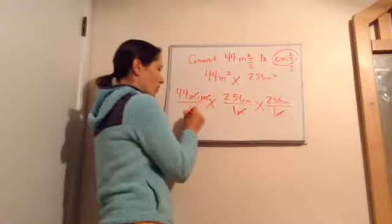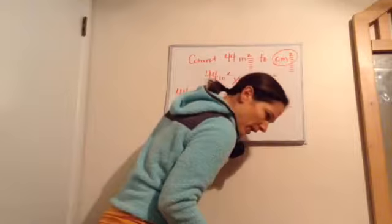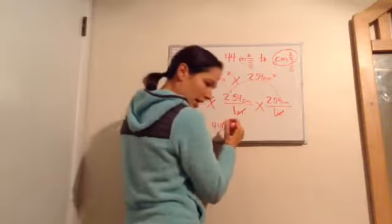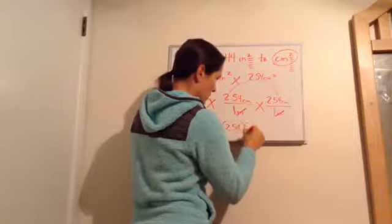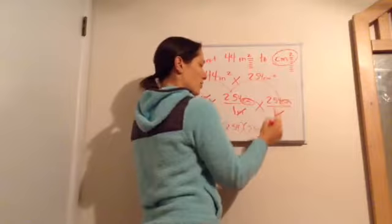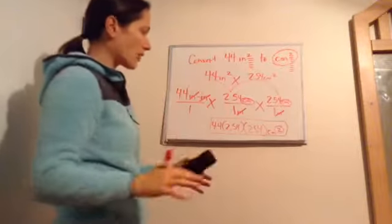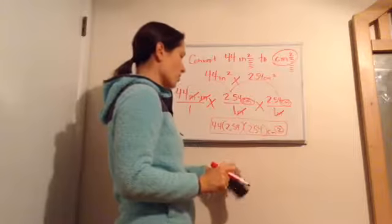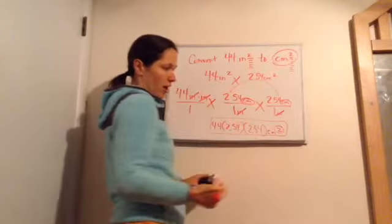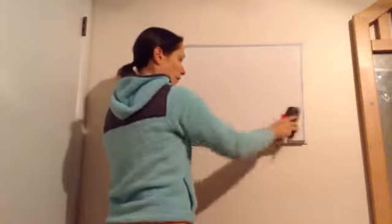Now just multiply: put this over 1 and multiply 44 times 2.54 times 2.54. The answer is 44 times 2.54 times 2.54 centimeters squared. The book leaves it in that form as the final answer — if you used a calculator you'd get the full decimal answer. Centimeter times centimeter makes centimeter squared.